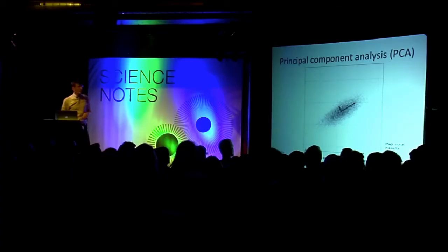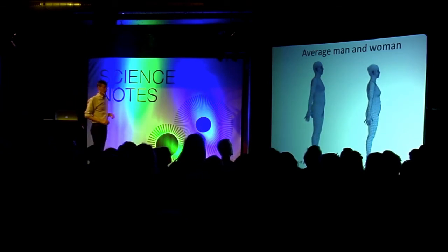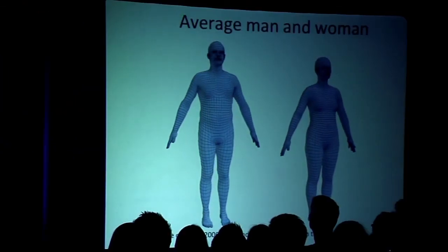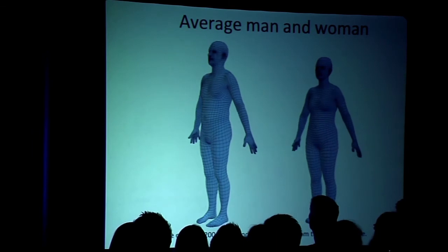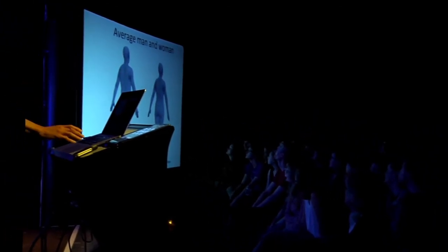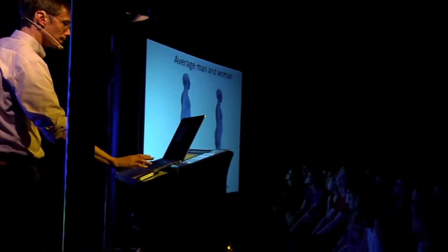So, the average male and female look like this. This is constructed from about 2,000 different people each, chosen from the U.S. and Europe, and they don't look so bad, not too bad.